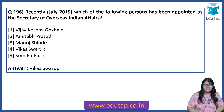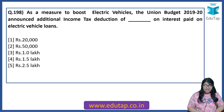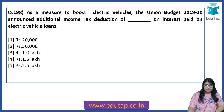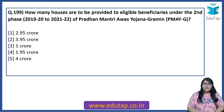Which of the following persons has been appointed as the Secretary of Overseas Indian Affairs? The answer is Vikas Swaroop. Angel tax issue is related to which of the following? It is associated with startups. As a measure to boost electric vehicles, the Union Budget 2019-20 announced an additional income tax deduction of 1.5 lakh rupees on interest paid on electric vehicle loans.